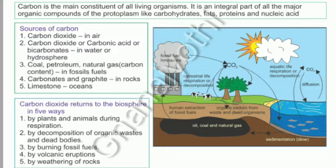Carbon dioxide returns to the biosphere in five ways: by plants and animals during respiration; by decomposition of organic waste and dead bodies; by burning fossil fuels; by volcanic eruptions; and by weathering of rocks.